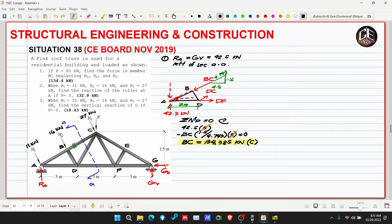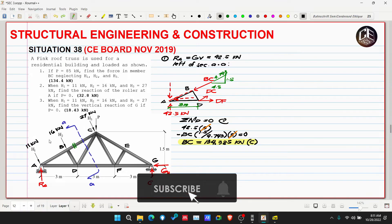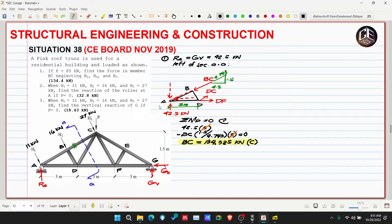If you think getting RA by taking moments at G is difficult, you'd be right. You'd need to resolve the 11, 16, and 27 kilonewton forces into vertical and horizontal components and find all those distances, which takes time. So let's first find GB by taking moments at A instead.